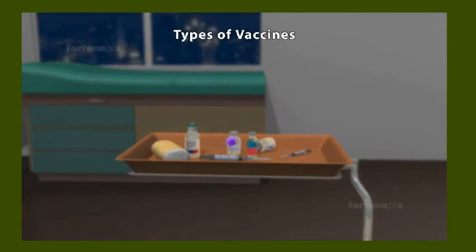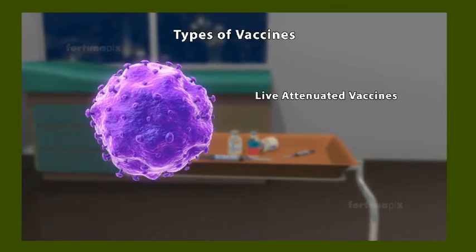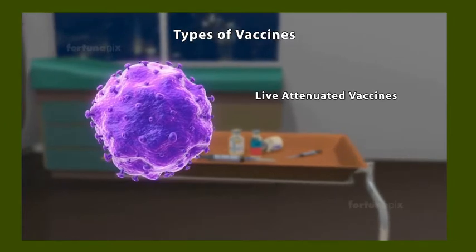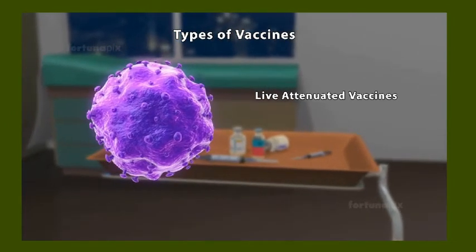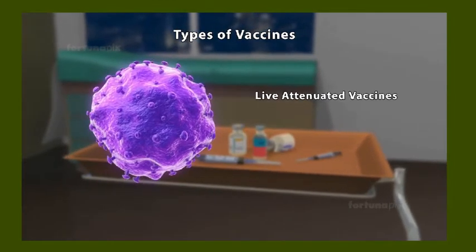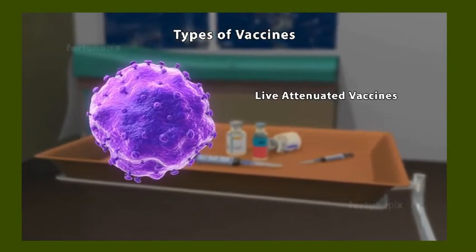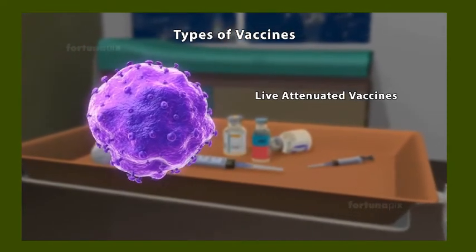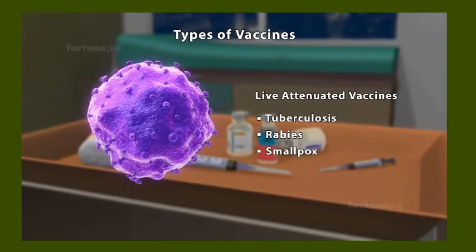Types of vaccines: Live attenuated vaccines contain a virus or bacteria which is weakened in a laboratory to the point where it is still alive and able to reproduce but cannot cause serious illness. Examples of live attenuated vaccines are those against tuberculosis, rabies, and smallpox.